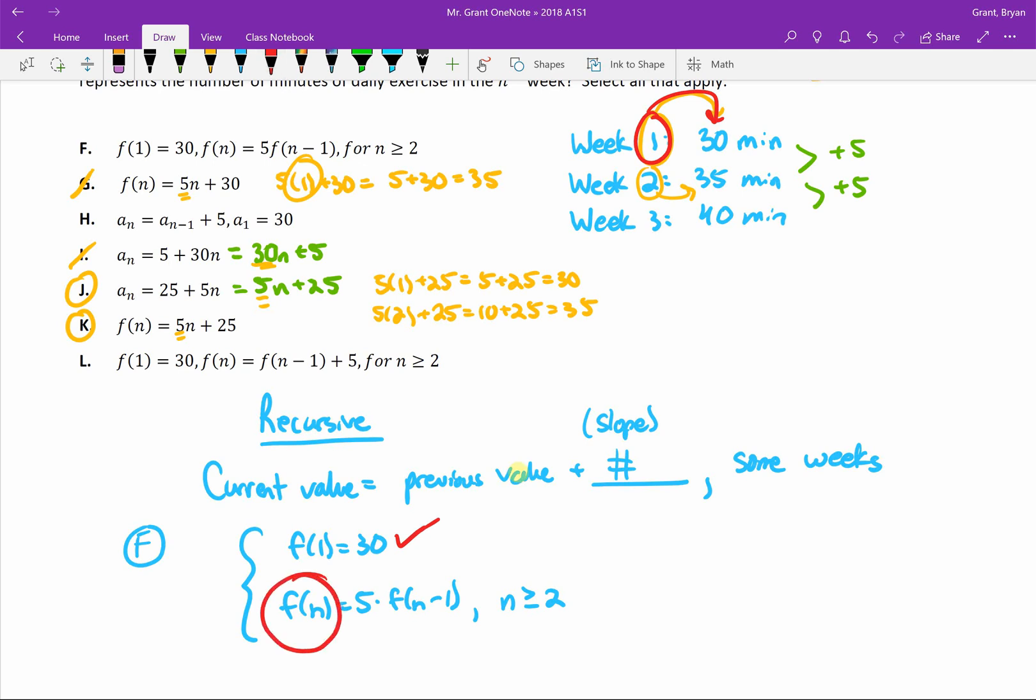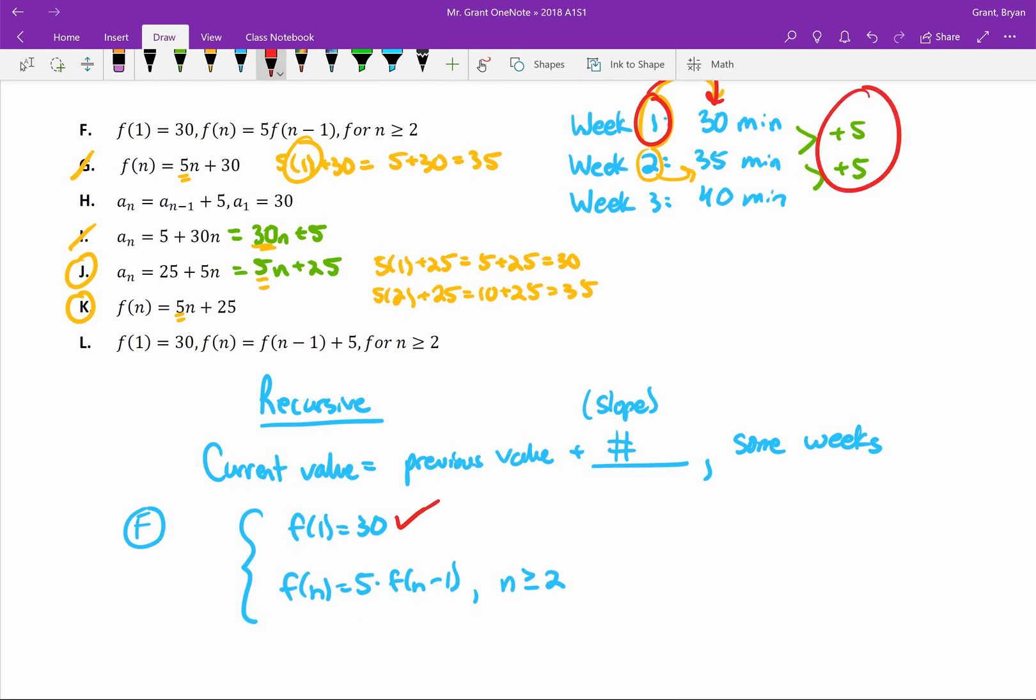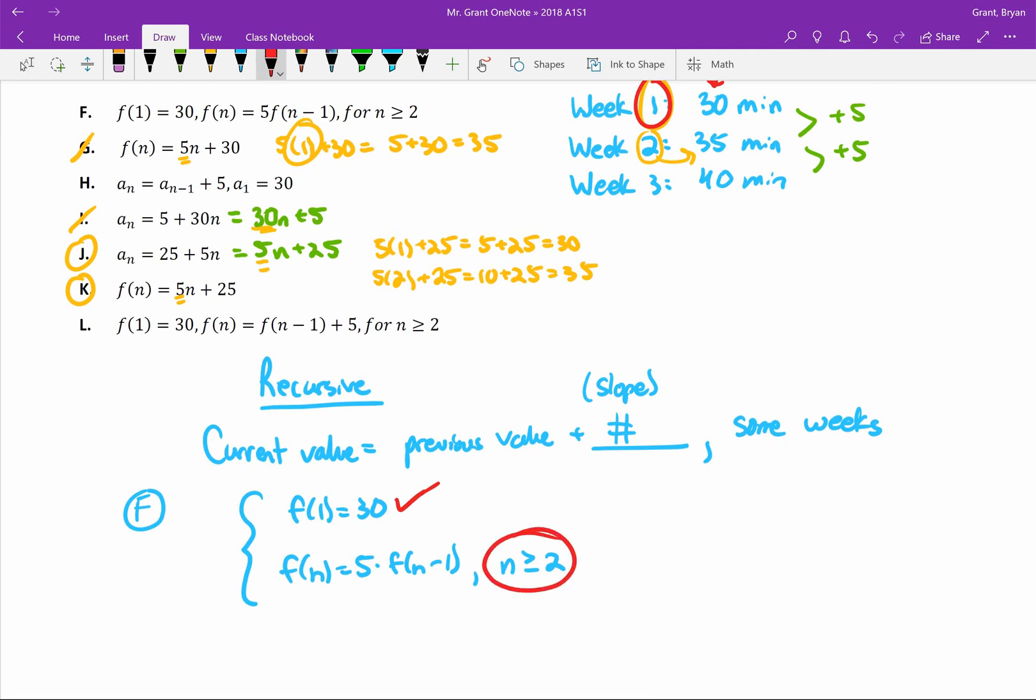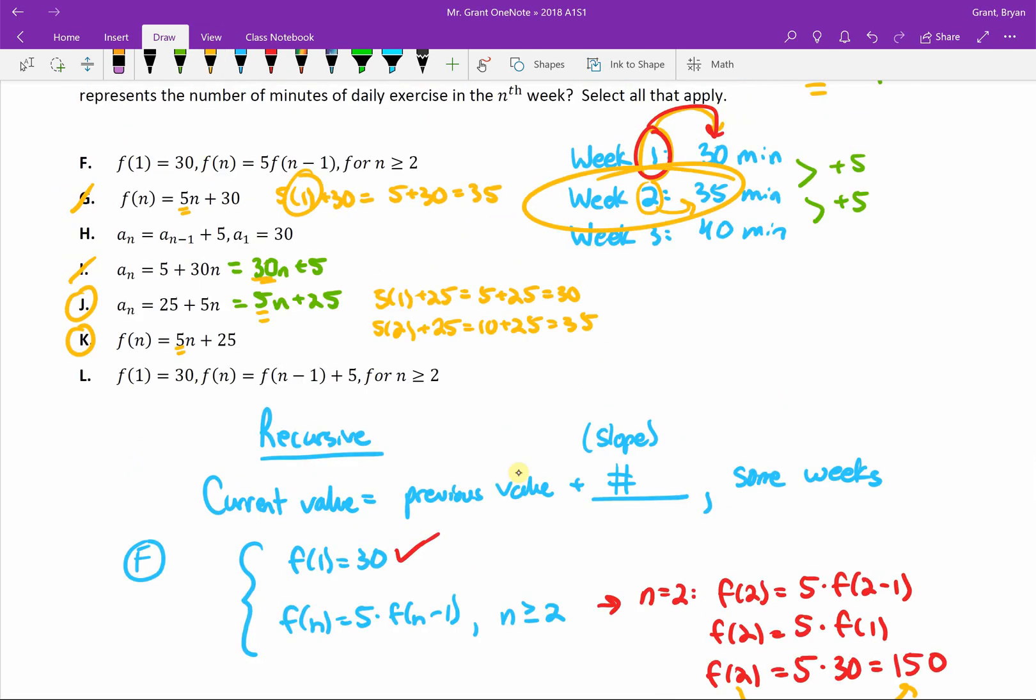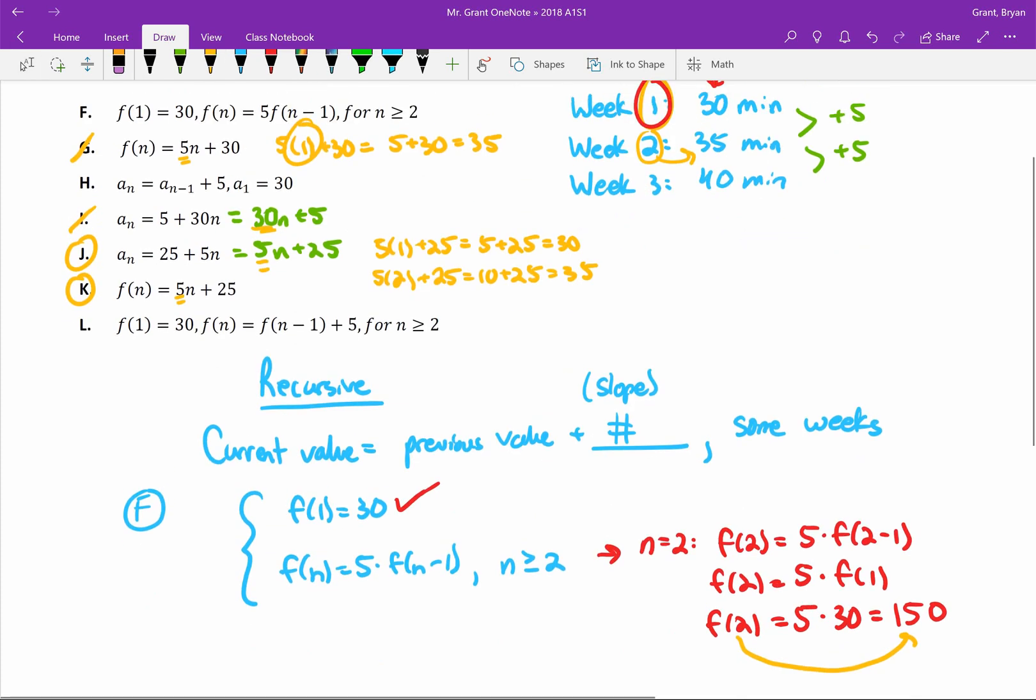F(1) = 30 means in the first week, we did 30 minutes of exercise. That's right. Then it says to find the current amount of exercise you're doing, take 5 and multiply it by the week before. Let's try N = 2. It becomes F(2) = 5 × F(2-1), so F(2) = 5 × F(1). F(1) is 30, so we end up with 150. This says in the second week we did 150 minutes of exercise. We're not multiplying our exercise by 5 every time. So I think F is going to be out.